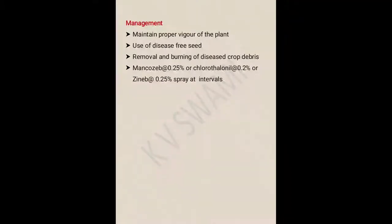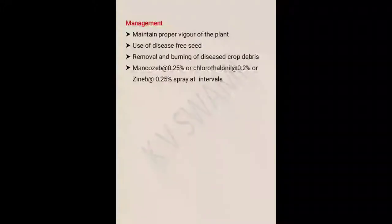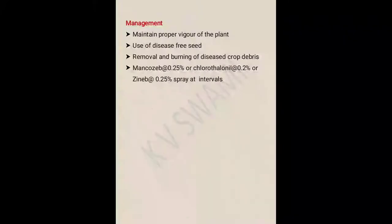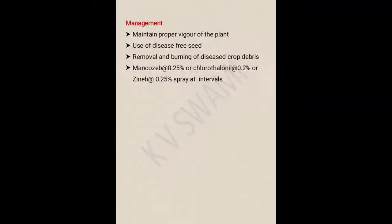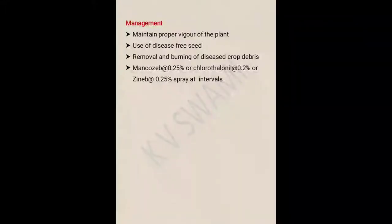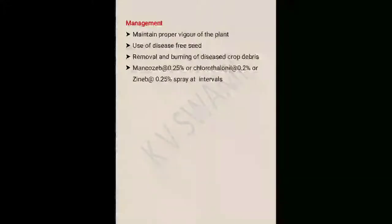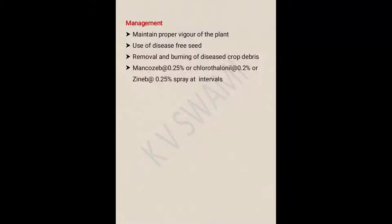Now let us discuss management practices to tackle Alternaria early blight. First, maintain proper vigor of the plant; use disease-free seeds; remove and burn diseased crop debris; spray mancozeb at 0.25% or chlorothalonil at 0.25% at regular intervals.